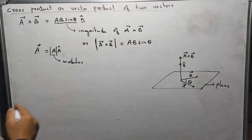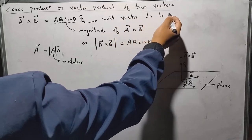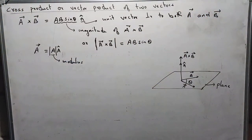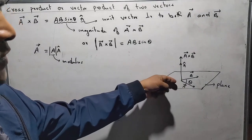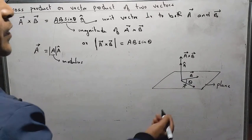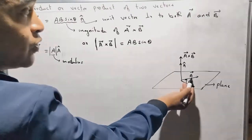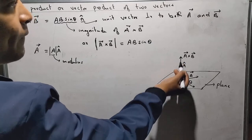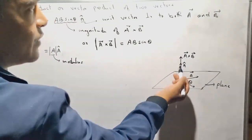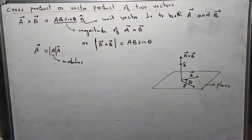What is this n cap? This n cap is a unit vector which is perpendicular to both vector A and vector B. Looking at the figure, this is vector A and this is vector B. When you take A cross B, you are rotating the vector from A towards B through an angle theta. When you do that, you get a new vector pointing up, which is perpendicular to the plane containing vector A and vector B. That is why we have n cap here — a unit vector perpendicular to the plane containing A and B.